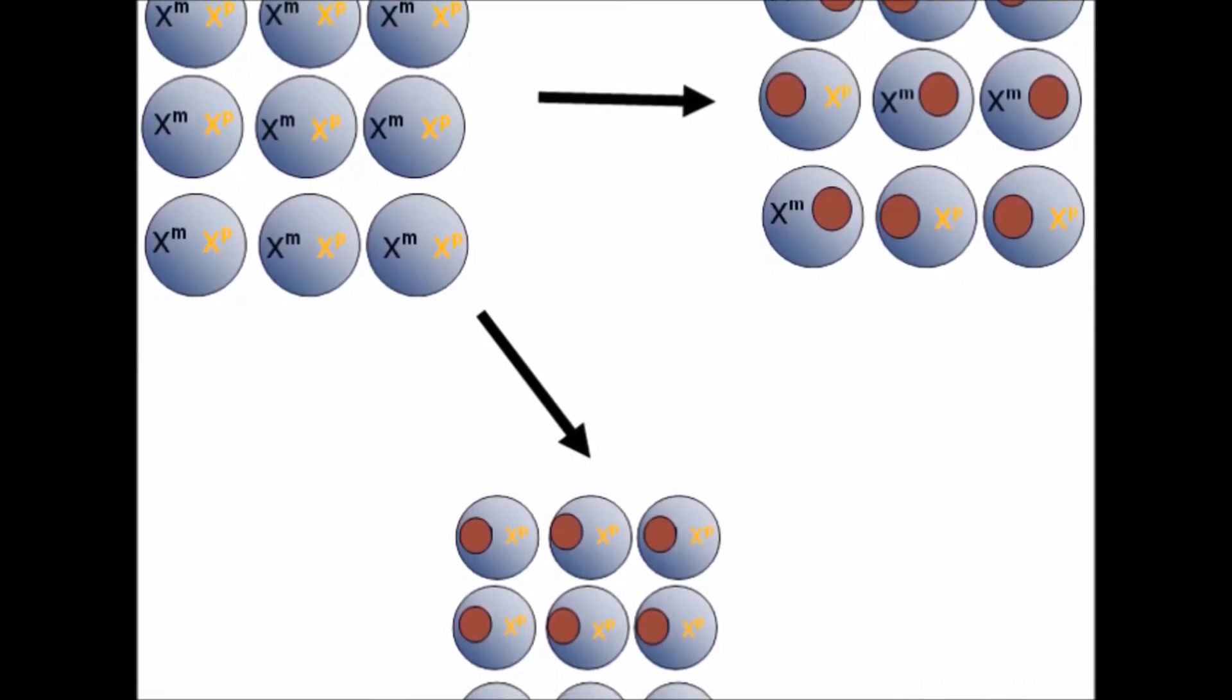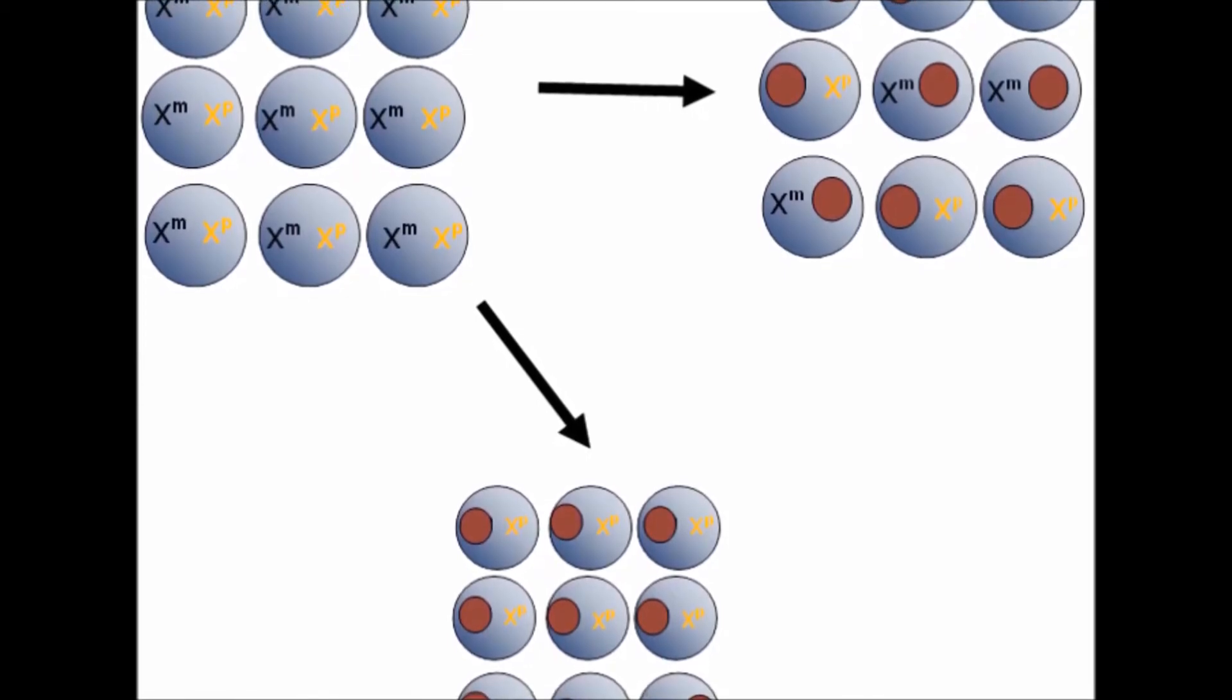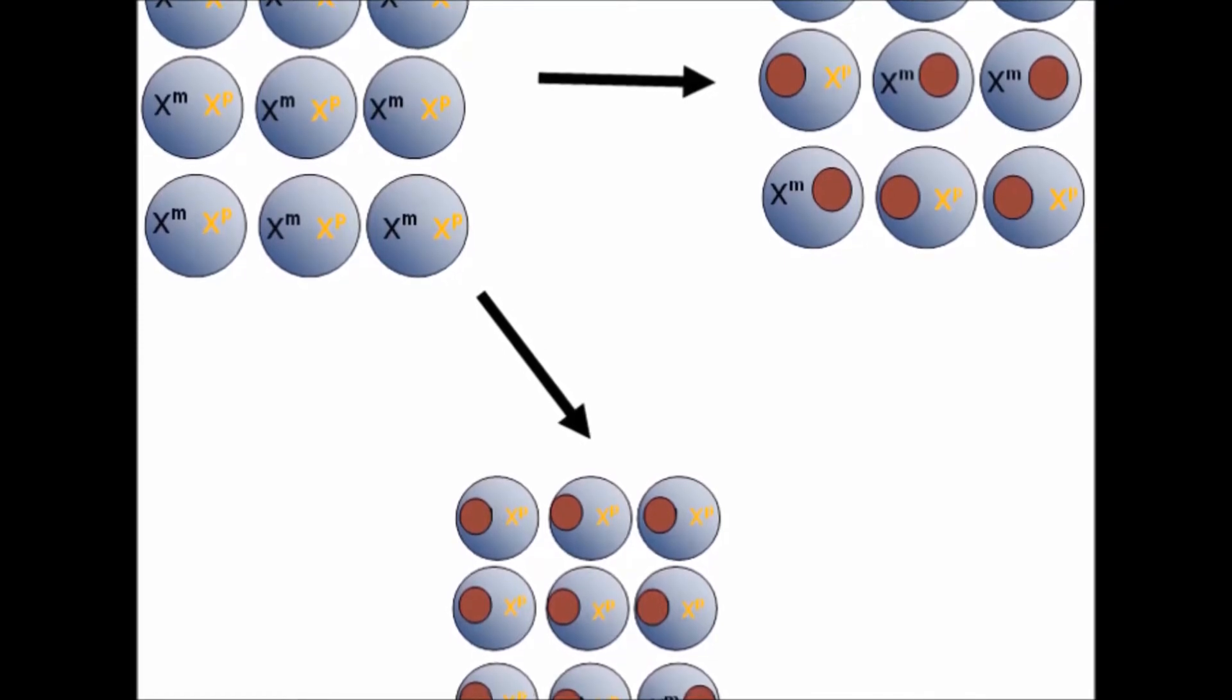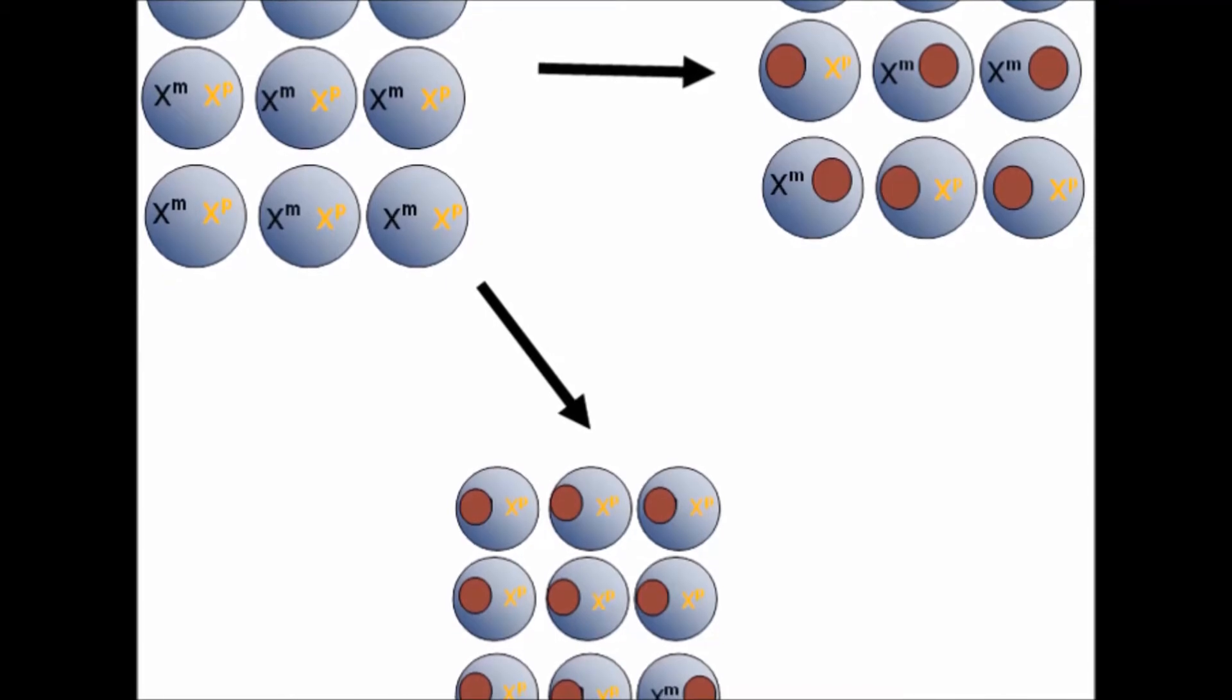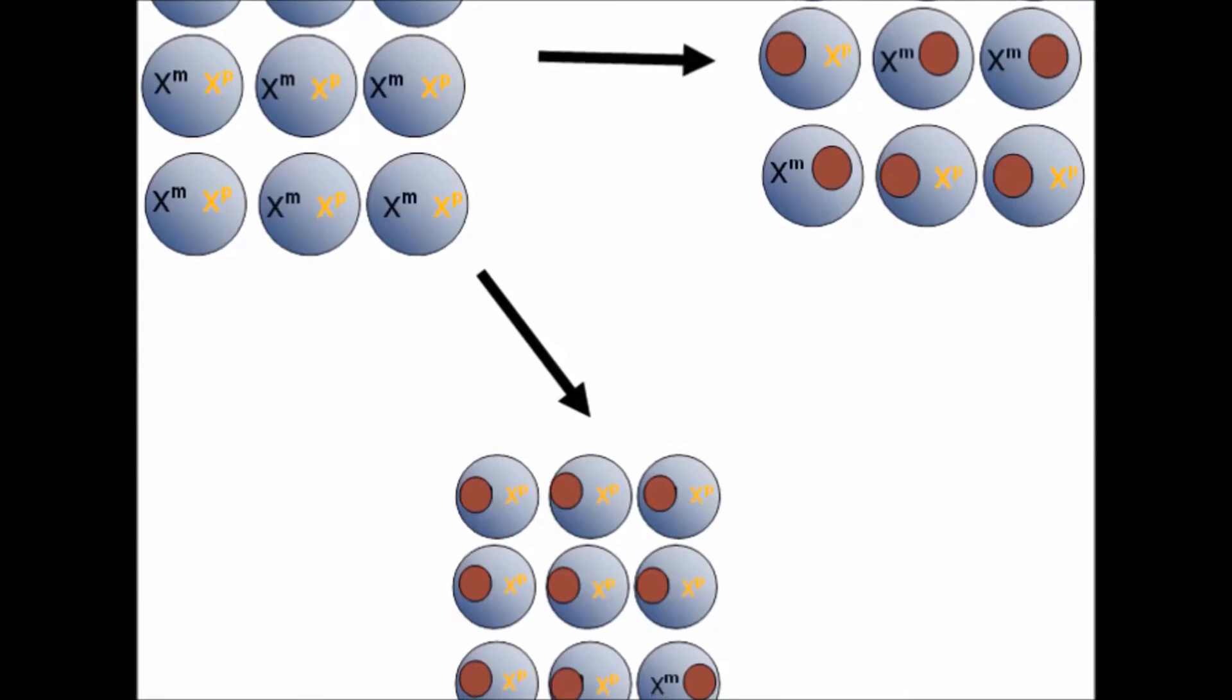Because X inactivation is usually random, the X chromosome inherited from the mother is active in some cells, and the X chromosome inherited from the father is active in other cells. However, when the female has an X chromosome with a duplicated copy of the MeCP2 gene, the abnormal chromosome is often the one inactivated in many or all the cells.